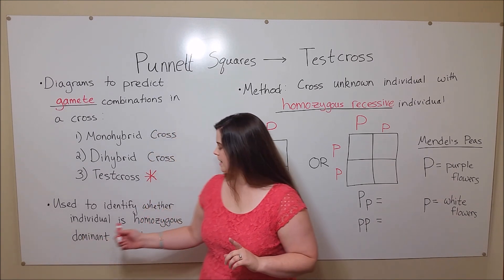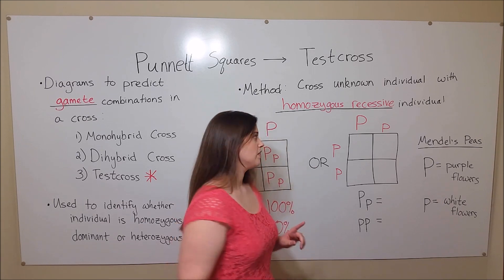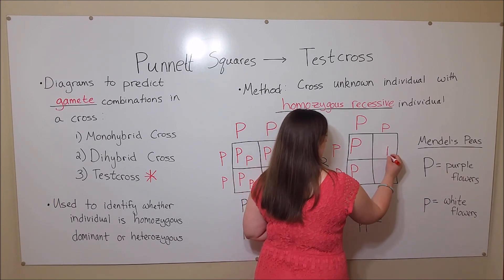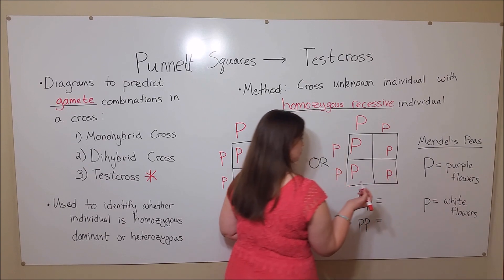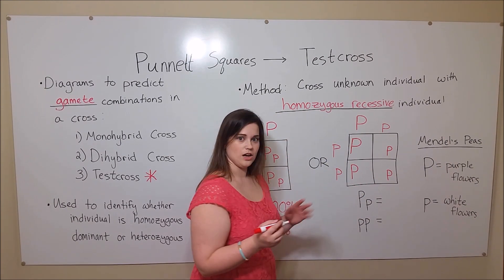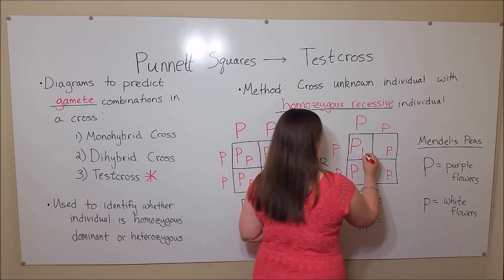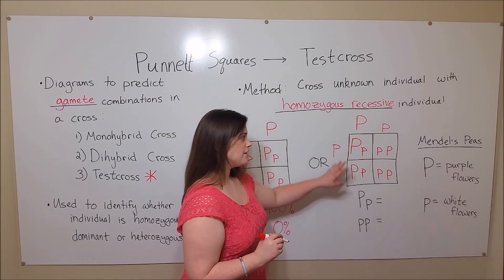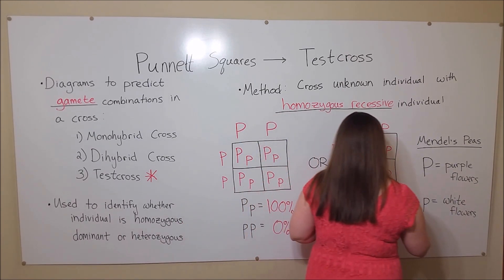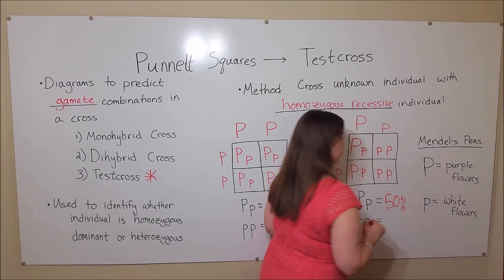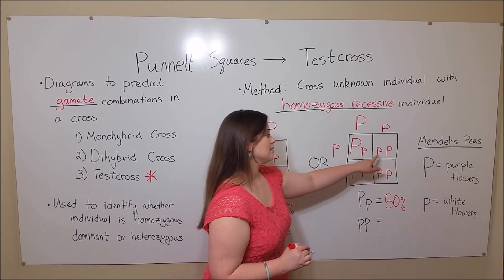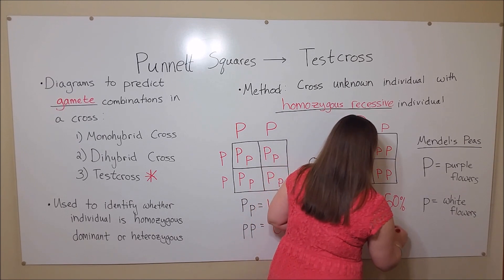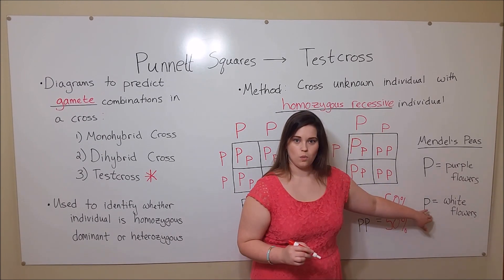If the unknown individual is heterozygous — the other possibility — then it could give the dominant allele to 50% of the offspring and a recessive allele to 50% of the offspring. The homozygous recessive parent is still going to be giving away just the recessive allele. So in this case, we have 50% of our offspring being heterozygous with purple flowers, and 50% of our offspring being homozygous recessive, or having white flowers.